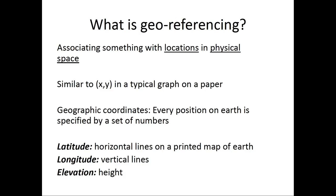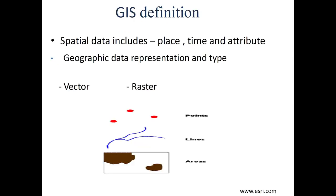Every position on Earth is specified by a set of numbers. The popular, well-known ones: latitude, which is a horizontal line on a printed map of Earth; longitude, which are vertical lines; and elevation, which is the height. These are generally used in geo-referencing a particular place. Continuing our discussion on the GIS definition — spatial data is important in GIS and it includes place, time, and attribute.